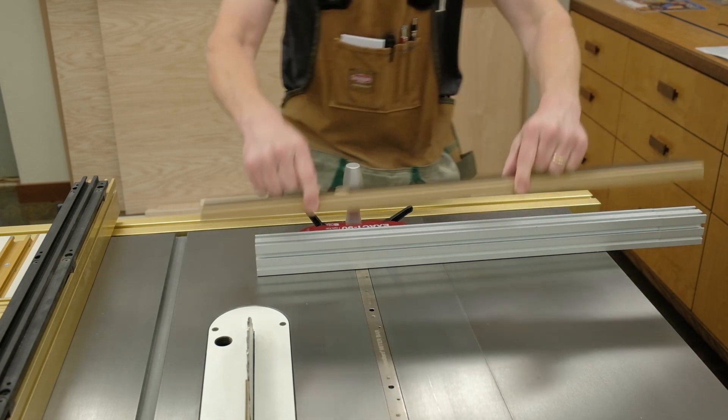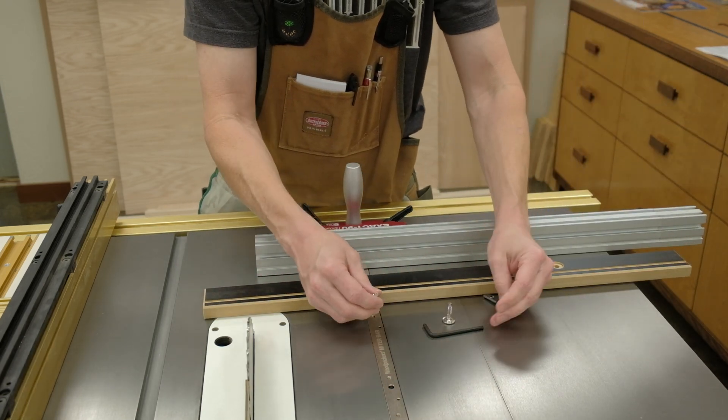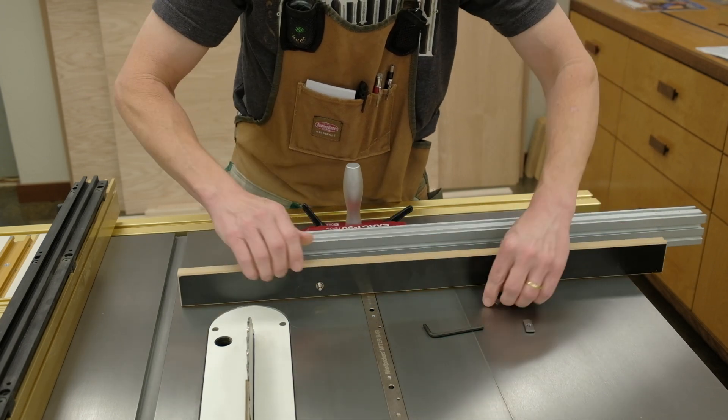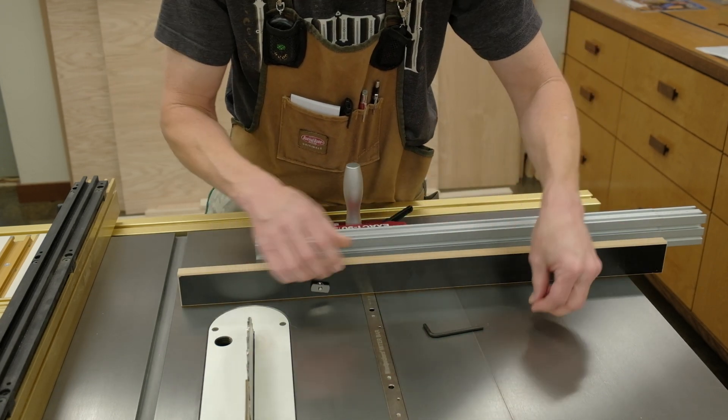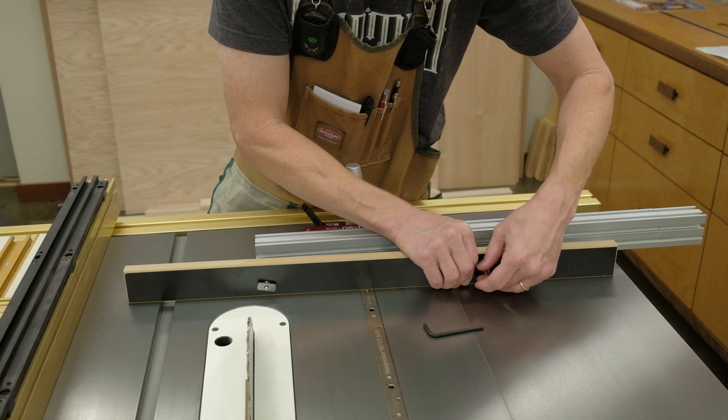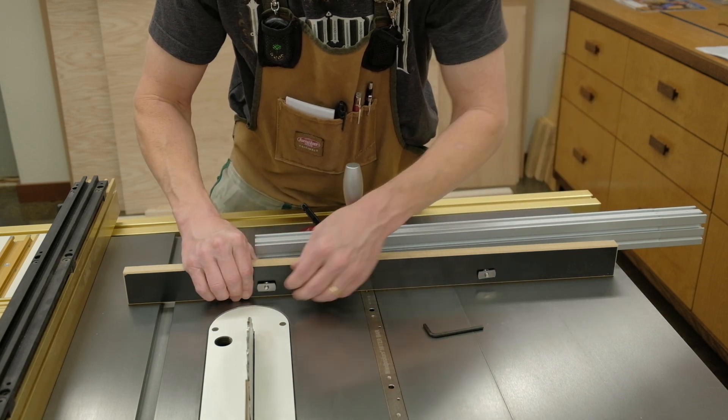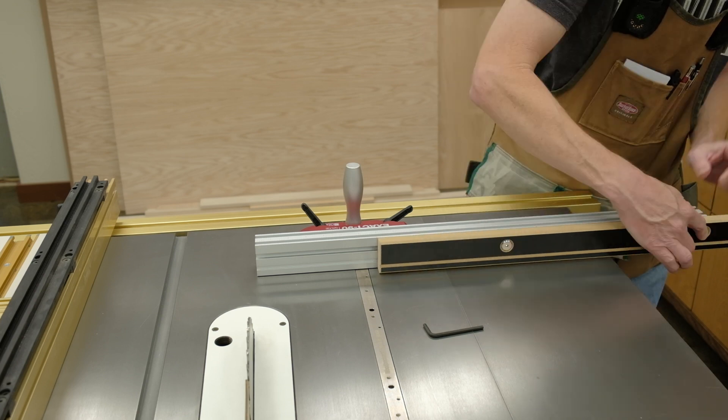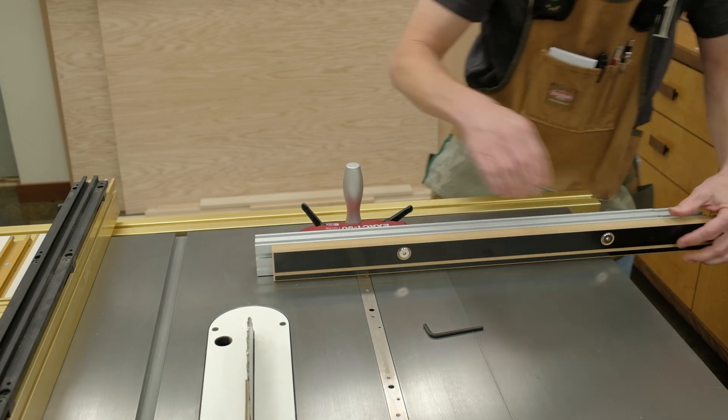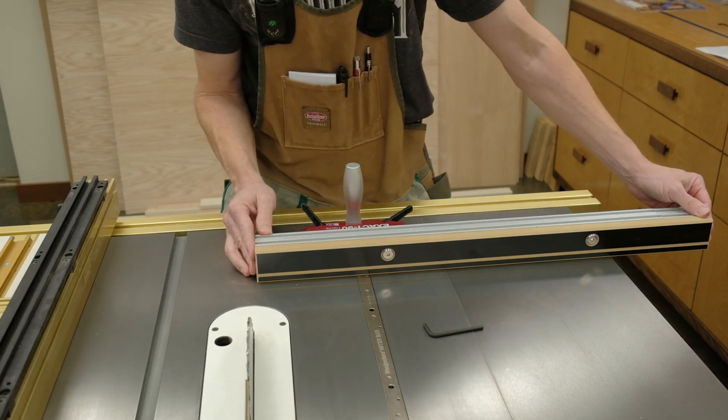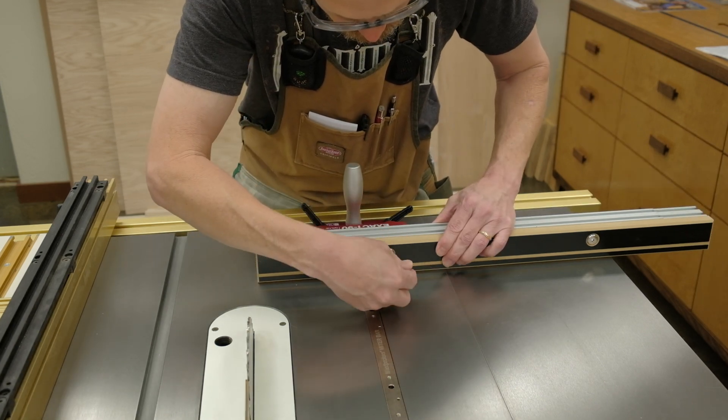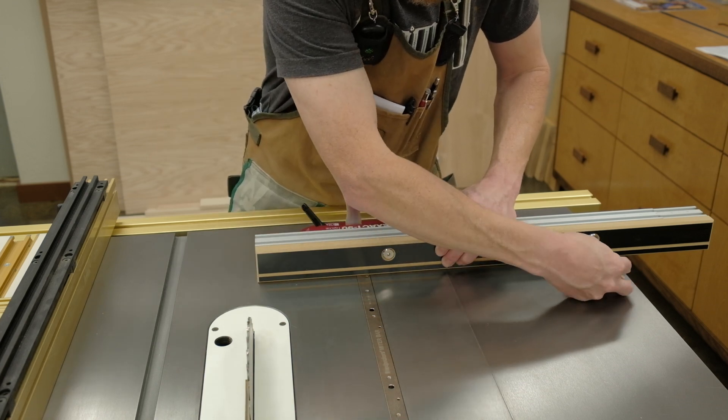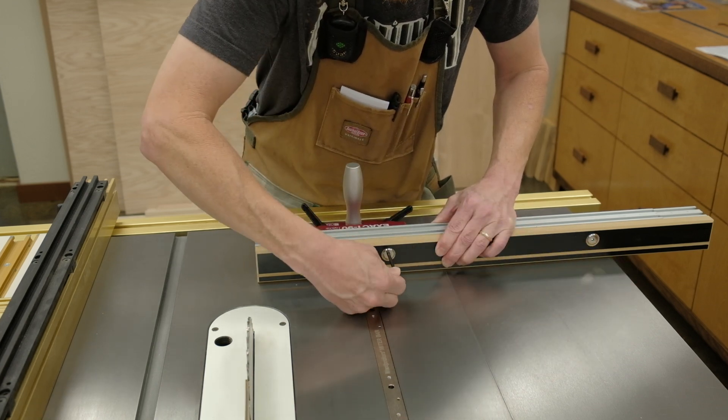So the second step in the instructions is to install the sacrificial fence. And it actually, in the instructions, says that this is optional. Obviously, you don't need the sacrificial fence in order to use the miter gauge. But I would actually say, and we'll see it as we move along, that you do not want to install the sacrificial fence at this point. It'll only be a hindrance to much of the setup and calibration. It became clear to me, and I ended up removing it a bit later, that there just really is no point in having it installed at this point.